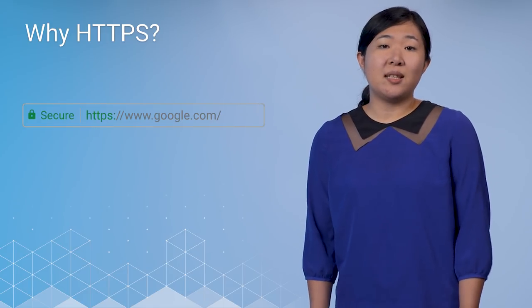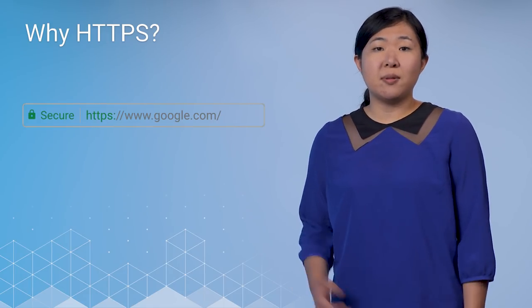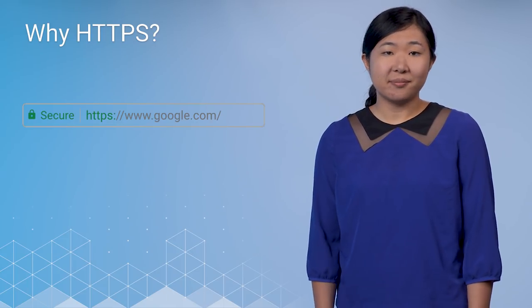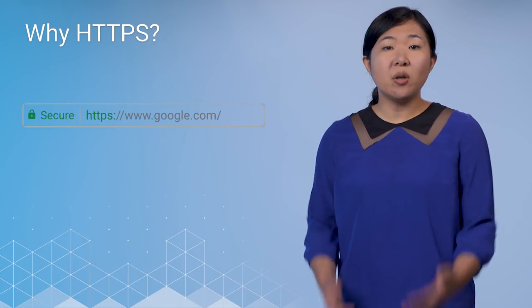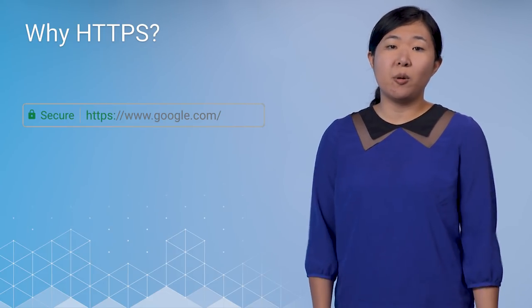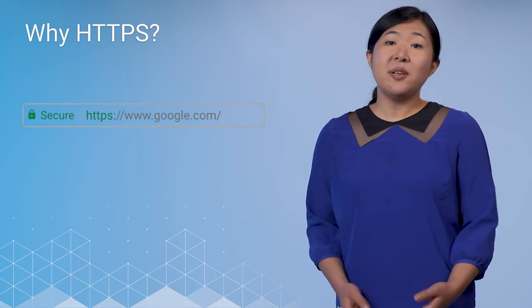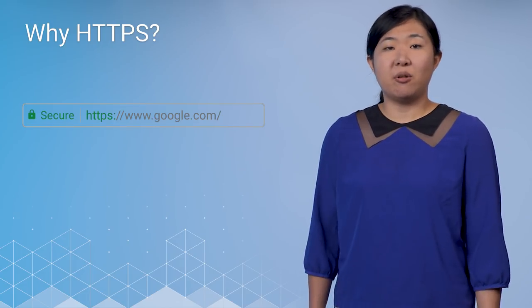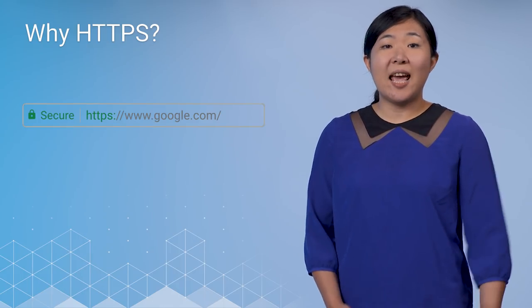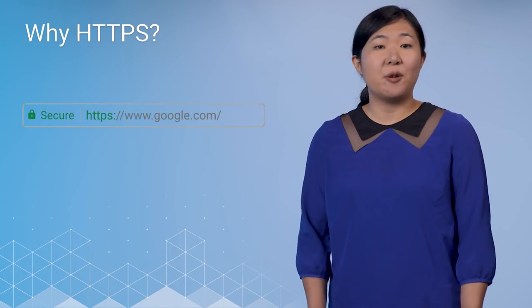Hypertext Transfer Protocol, or HTTP, is a protocol used to exchange data between the browser and the website you connect to. HTTPS is a secure version of that protocol, where the S stands for secure. It indicates that all communications between your browser and the given web server are encrypted using a cryptographic protocol called Transport Layer Security, or TLS. By showing the green lock and the word 'secure' in the URL bar, the browser indicates to the user that the connection is using TLS, and therefore it's safe.